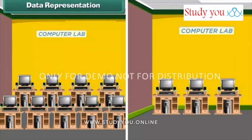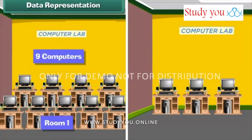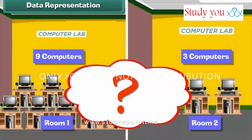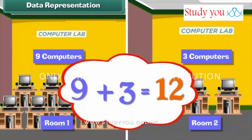Look at the diagram that shows the arrangement of computers in your computer school. Look at the plan and then answer the questions that follow. How many computers are there in room 1? There are 9 computers in room 1. How many computers are there in room 2? There are 3 computers in room 2. How many total computers are present in school? There are 12 computers in the school.